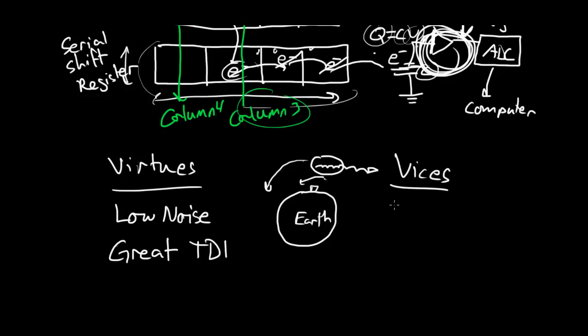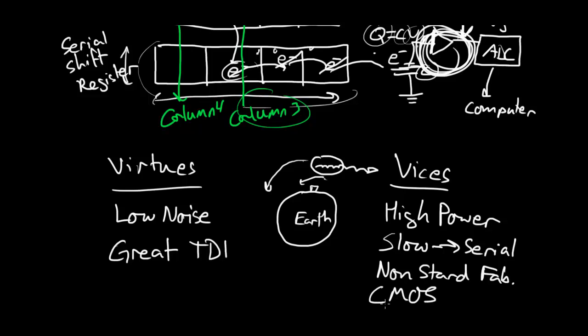What about vices? There are things it's bad at. One is it's very high power, and this has to do with the fact that you have to charge and de-charge a lot of clock lines over a large area to move the charge along. Another vice is that it's slow because it's serial. We're trying to suck out the entire array through a single channel or a few channels, so it's like trying to empty a large cup by sucking through a small straw. Another vice is that it's non-standard in its fabrication. This is just a feature of the direction the semiconductor industry has taken. Most of the semiconductor industry is CMOS in style for digital logic and whatnot, and so there are aspects of the CCD imager that do not fit well with CMOS architecture, even though it's all silicon and the physics is all the same. It's just easier to manufacture CMOS imagers in current processes.